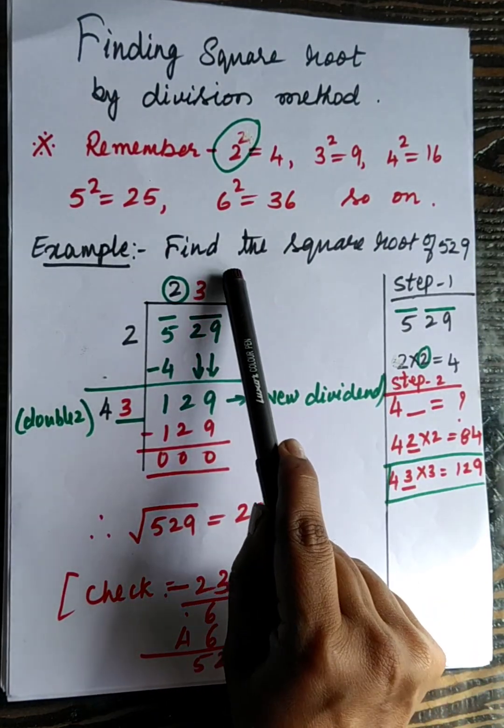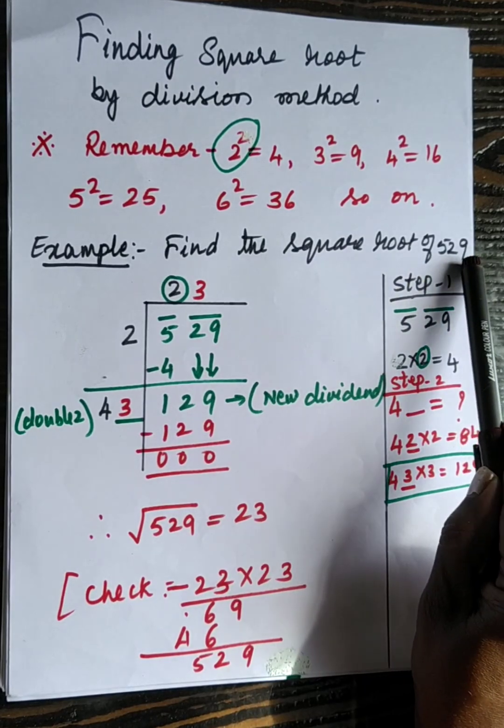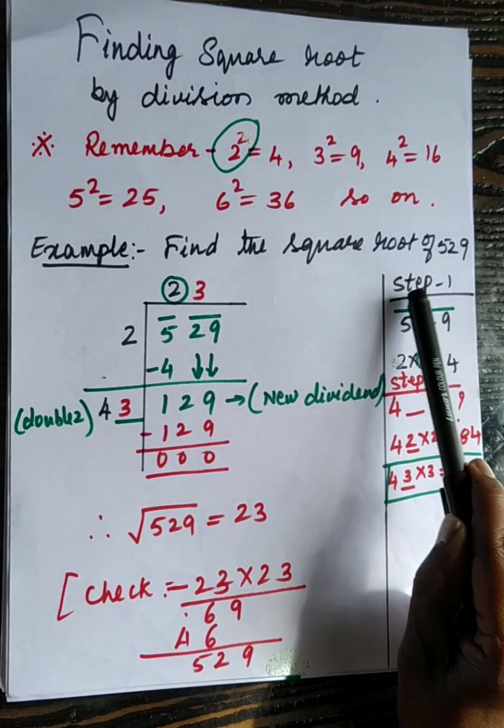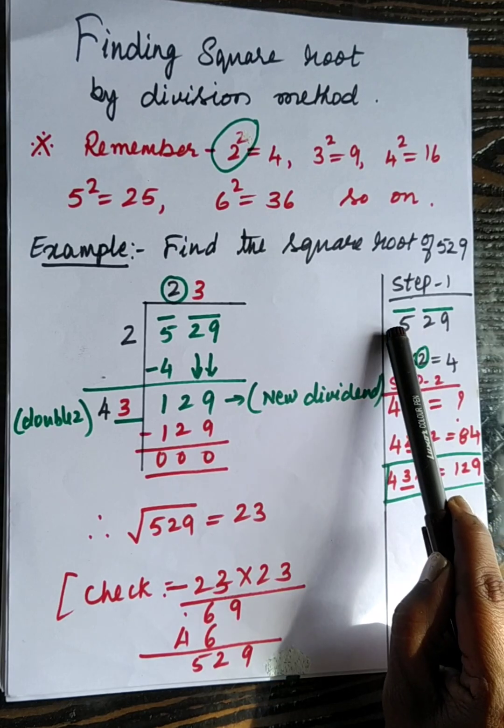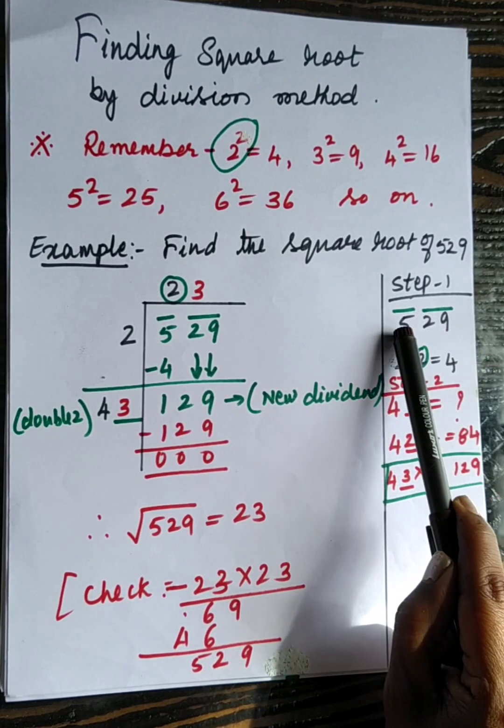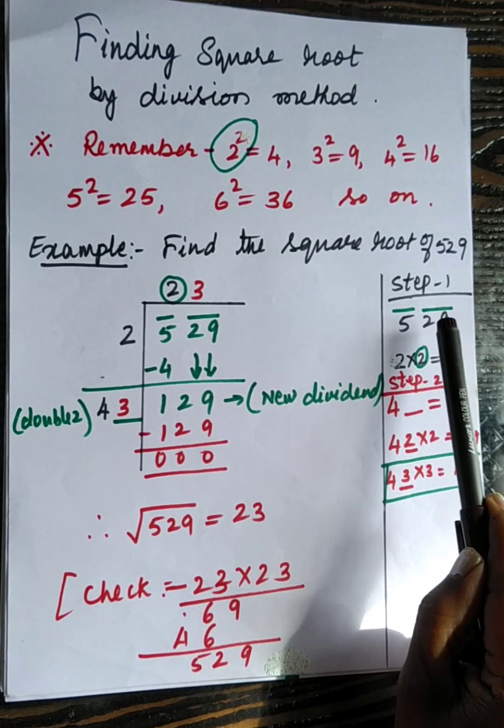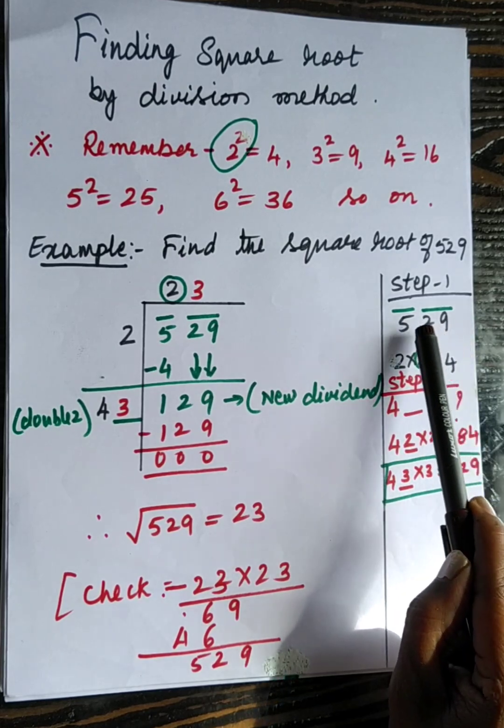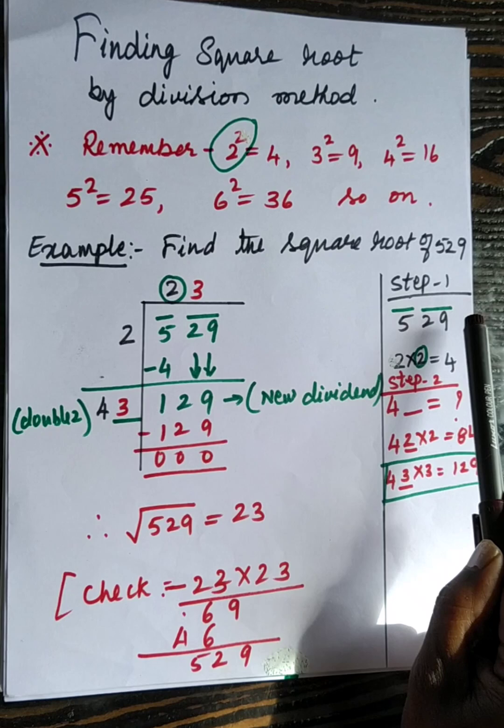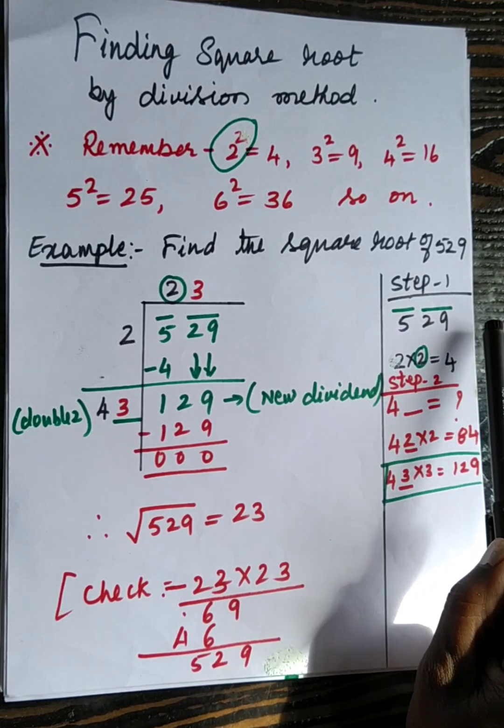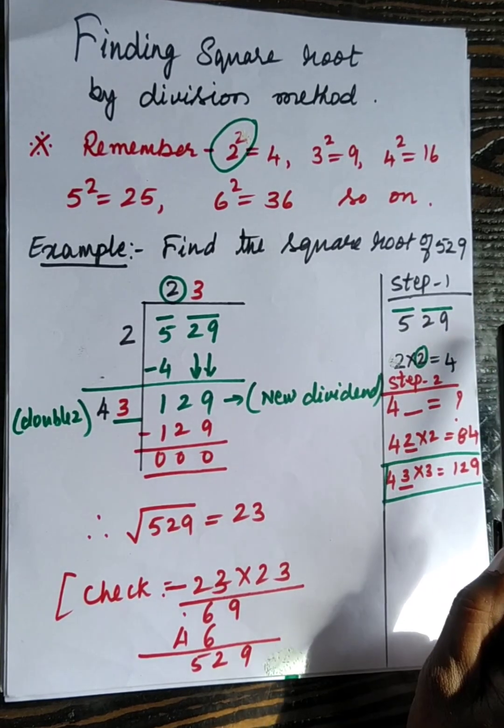Let's solve one problem. Find the square root of 529. In step 1 you have to put bar for the first digit if it is an odd number. 529 has 3 digits, so put bar for the first digit and another bar over 29. If you have 4 numbers to find, you should put bar for 2-2 numbers.